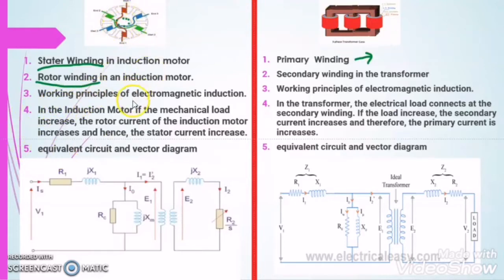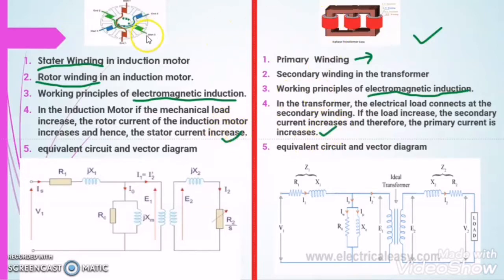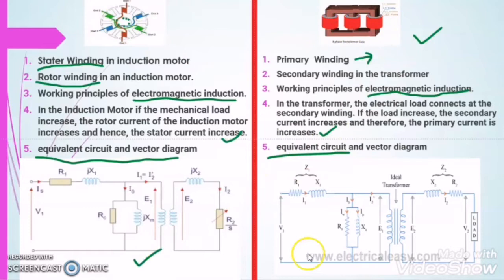The third similarity is that the working principle of the induction motor is electromagnetic induction, and in the case of the transformer also, the working principle is the same — electromagnetic induction. The fourth similarity is that when we increase the load in the three phase induction motor, the rotor draws high current and accordingly the stator also starts drawing high current. Similarly, in the transformer, when load increases, the secondary winding draws high current and accordingly the primary winding also draws high current. The equivalent circuits of both are also very similar to each other.